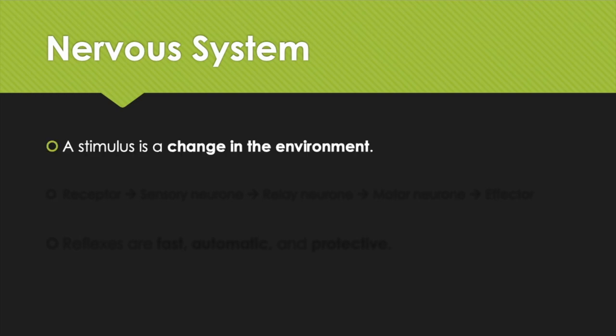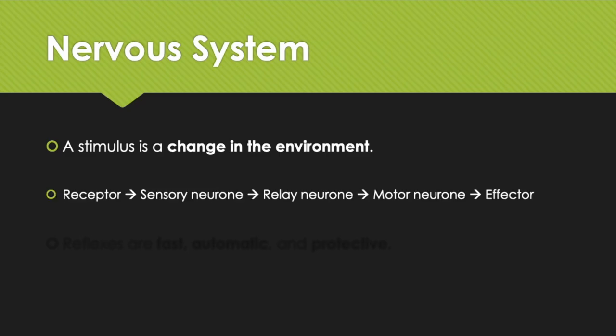The nervous system: a stimulus is defined as a change in the environment — it could be anything, a loud noise, a sudden change in light levels. You need to know the order that a stimulus travels along the nervous system. It starts at a receptor, which could be touch receptors in your skin or your eyes, then travels along the sensory neuron into a relay neuron, passed then along to a motor neuron.